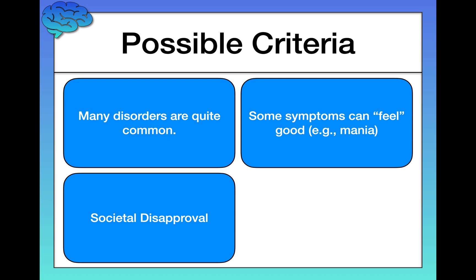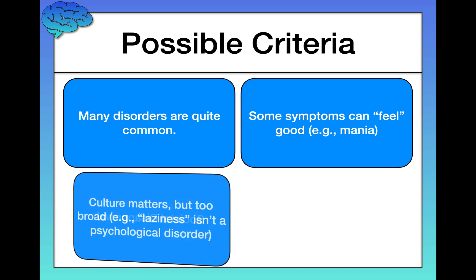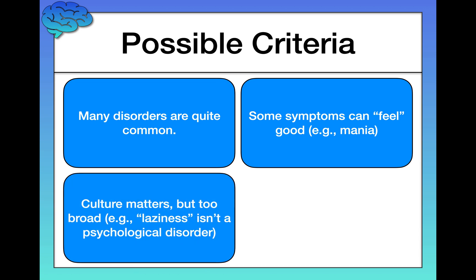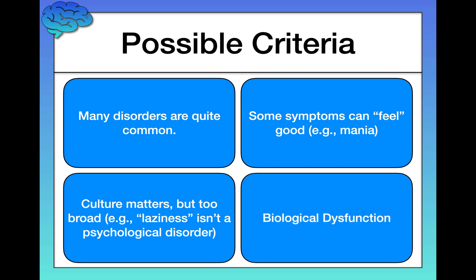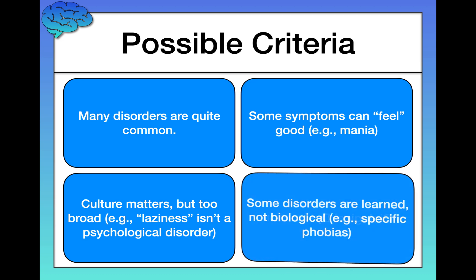What about societal disapproval — if society views something as bad or harmful, maybe that's pathological? Well, society disapproves of many things that aren't psychological disorders. For example, laziness is generally frowned upon, but being lazy certainly isn't the same as having a psychological disorder. Finally, biological dysfunction — again valid, but some disorders are learned and don't have a clear biological component. For example, specific phobias like arachnophobia are learned behaviors and we don't have evidence they're biological, so this criterion doesn't work on its own either.